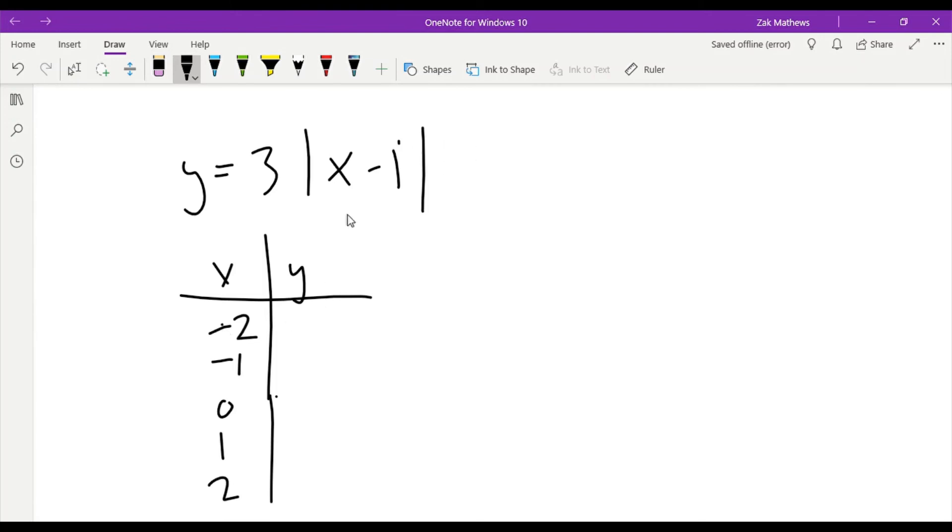When I plug that in, negative two minus one is negative three. Absolute value of negative three is three, and then three times three is nine. Negative one minus one is negative two. Absolute value of negative two is two times three is six. Zero minus one is negative one. Absolute value is positive one times three is three. One minus one is zero times three is still zero. And then two minus one is one times three is three. So we see that value of three repeat.